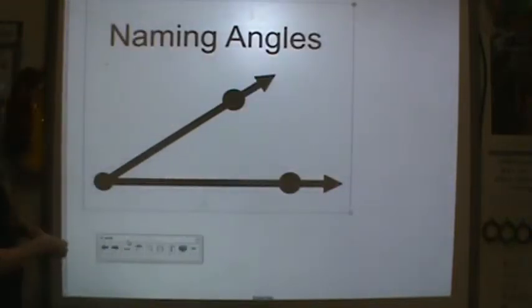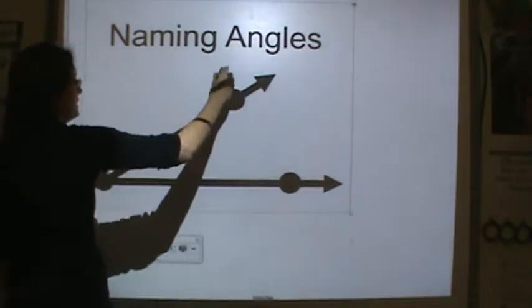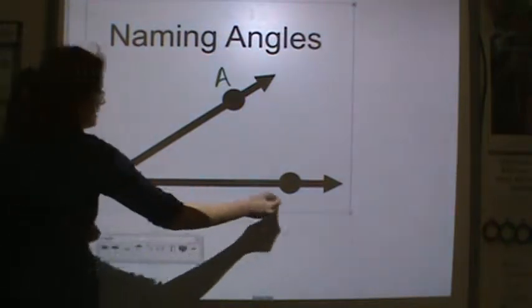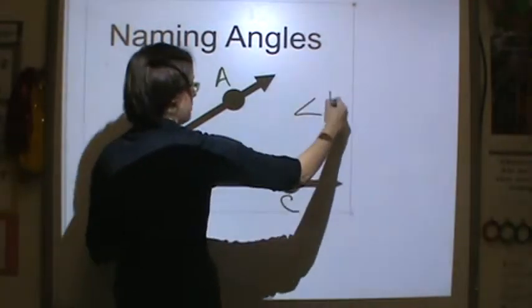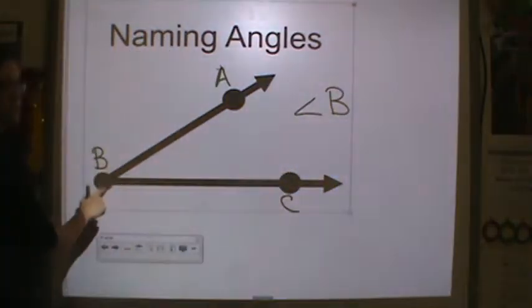So let's talk about naming angles. Let's say I have this angle A, B, C. Well, there are three ways that I can name this angle. I can name it as angle B because that is the vertex.